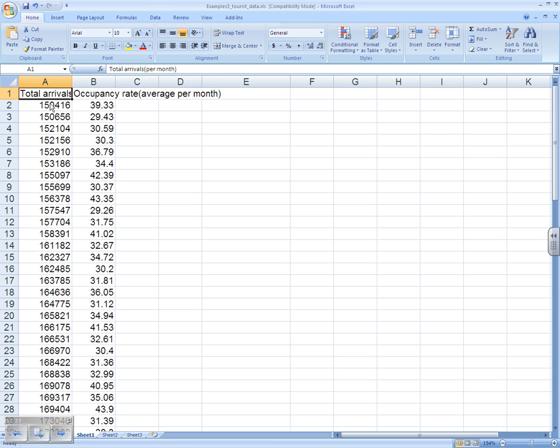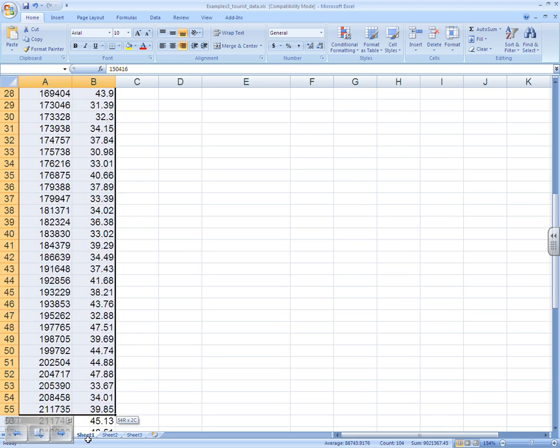Highlighting our data. X is our arrivals, that's our first column. Y is the occupancy rate, that's our second column.